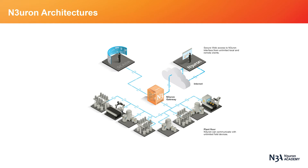To start with, this image shows one of the most straightforward architectures you can create using Neuron, which we call secure local communications. This architecture provides a single entry point to the plant floor in order to securely communicate with unlimited field devices, SCADA systems, and other third-party applications. This architecture model is where most users start once Neuron has been installed within the company's infrastructure.